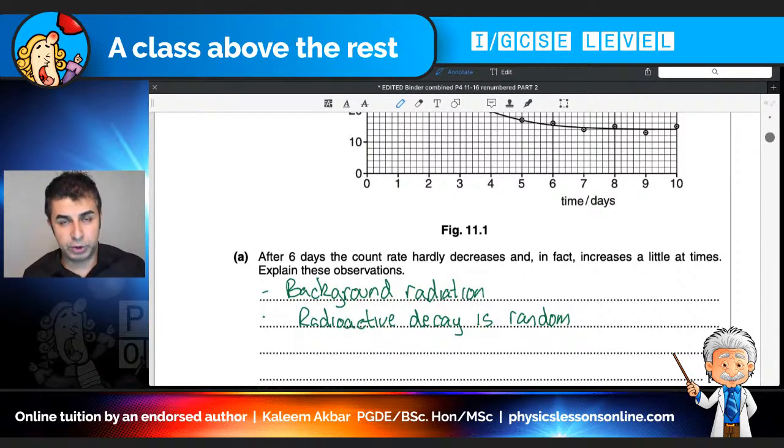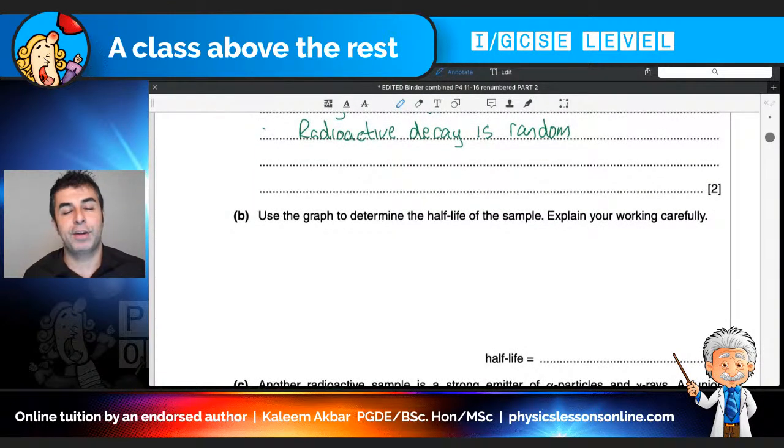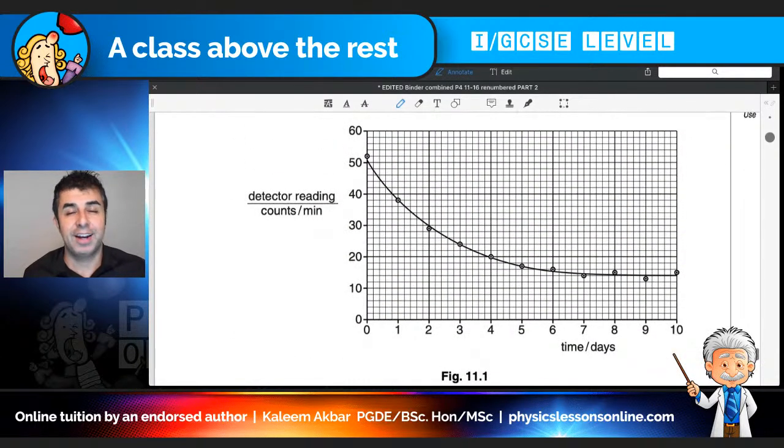The other kind of question you would get when it comes to half-life is where there is no background or where background has been accounted for. Now when I say there is no background it's basically the examiner's way of simplifying the question itself. Next, now I chose this example because it really hits home an important point about half-life. Use the graph to determine the half-life of the sample. Explain your working carefully. Now, the student who's going to make a mistake is going to quite simply do 52 divided by 2 to get 26. They're going to go down to 26. They're going to go all the way across and they'll go to about 2.6 days. It's wrong. That would be correct if this graph had accounted for background. In other words, no background radiation was present. The fact is background radiation is present.